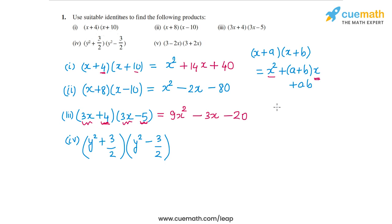So the identity I'm going to use in this case is (x+y)(x-y) is equal to x² - y². So the difference of the squares. So in this case, I will have (y²+3/2)(y²-3/2) will lead to (y²)². So that's y⁴ minus the square of 3/2. So that's minus 9/4. So that's the product in the fourth part.